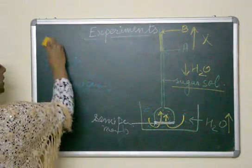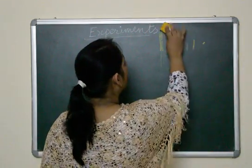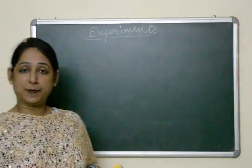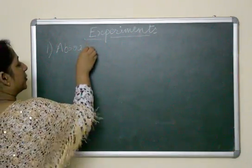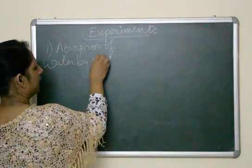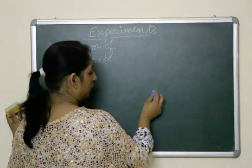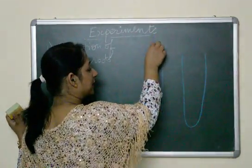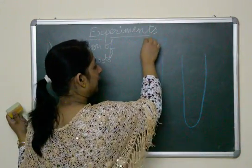The next experiment explains the absorption of water by roots. For this experiment, we are going to take two test tubes and in both test tubes we are going to place twigs or plants. These plants must have roots because we are explaining that plants absorb water through their roots.